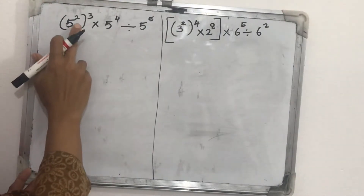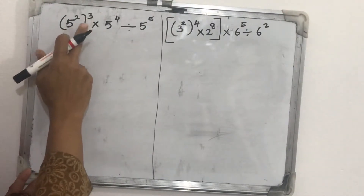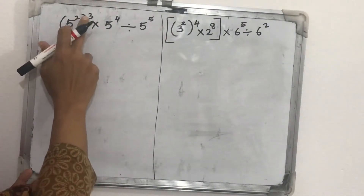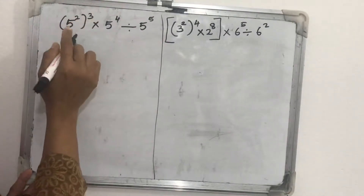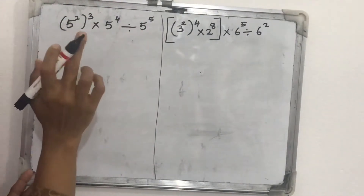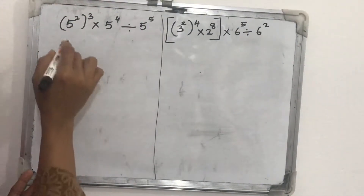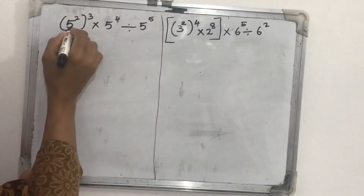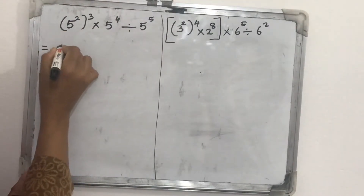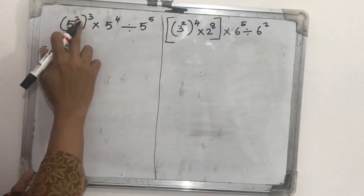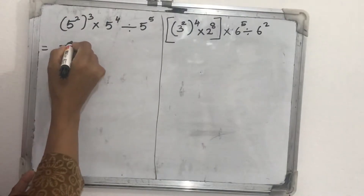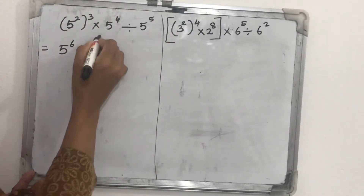Here we have five squared, whole cubed. Which law do we use? The law is: x raised to a, whole raised to b, equals x raised to a times b. We use that here, so five squared whole cubed becomes five raised to two times three, which is five raised to six.